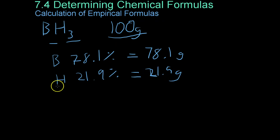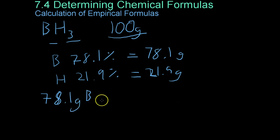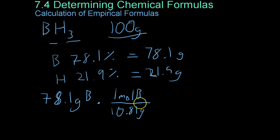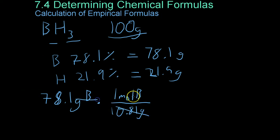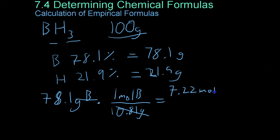Next, we use the molar mass as a converting factor to figure out the molar ratio of each element within this 100-gram sample. So if we have 78.1 grams of boron times 1 mole of boron weighs 10.81 grams, you cancel out the units,